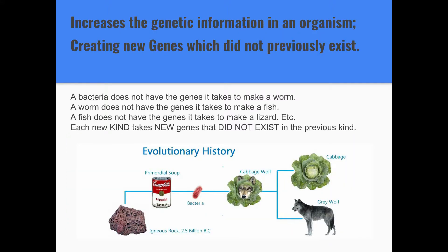Evolution is an unguided natural process which increases the genetic information in an organism, creating new genes which did not previously exist. Why does it have to be that? Because a bacterium does not have the genes it takes to make a worm. If evolution is going to explain where worms came from, it has to explain how bacteria could, over many many generations, give rise to a worm — and the only way to do that is if the bacterial DNA gained new genetic information to create new genes that it didn't already have.